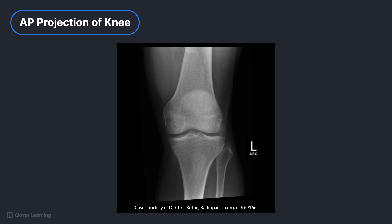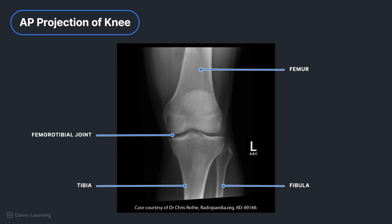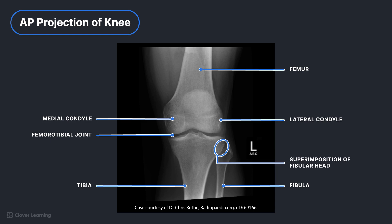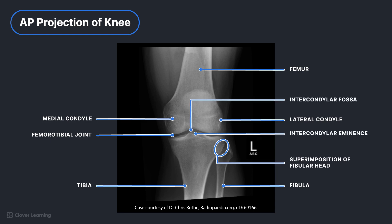We can tell this is an AP because the distal femur and proximal tibia and fibula are shown. The femorotibial joint space is open, with the articular facets of the tibia seen on end, with only minimal surface area visualized. It is a true AP with no rotation, as evidenced by symmetric appearance of femoral and tibial condyles in the joint space. The medial half of the fibular head is superimposed by the tibia, and the intercondylar eminence is seen in the center of the intercondylar fossa.